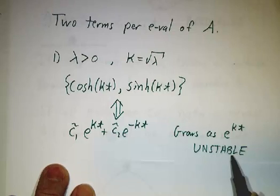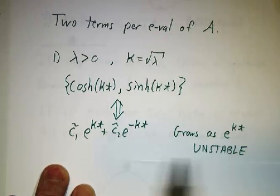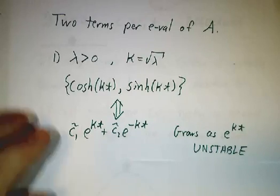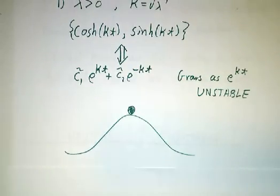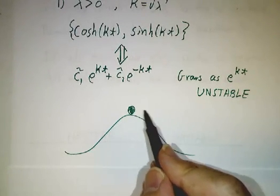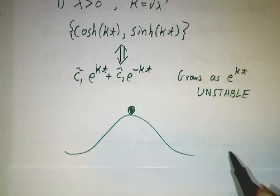So whenever you have a positive eigenvalue, you say it's unstable with a growth going as e to the square root of lambda times t. This is what you have whenever you have a ball at the top of a hill.